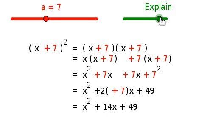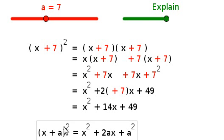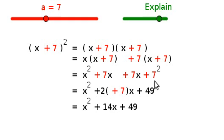So that ends up, you end up with a general rule of x plus a all squared is x squared plus 2ax plus a squared. But I like to think of it as numbers.